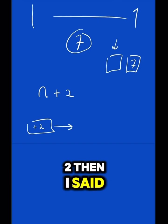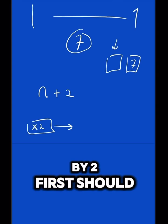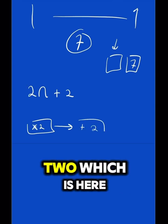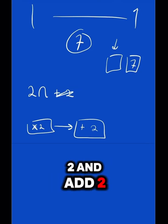Then I said, sorry, I said times it by 2 first, which will be here. Then I said add 2, which is here. So, 2n, and then 2n add 2.